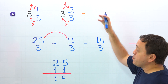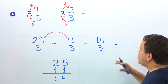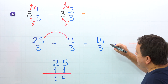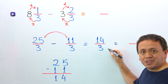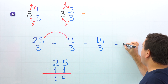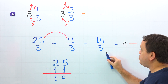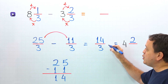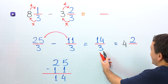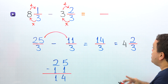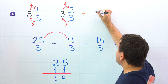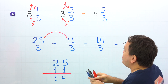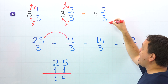However, we need the answer as a mixed number, not as an improper fraction. So finally, we're going to convert this improper fraction to a mixed number. How many times does 3 go into 14? Well, 3 goes into 14 four times. Then we multiply: 4 times 3 is 12. To get 14, we need to add 2. The denominator stays the same — 3 comes over here. The final answer is 4 and two-thirds. So eight and one-third minus three and two-thirds gives us 4 and two-thirds.